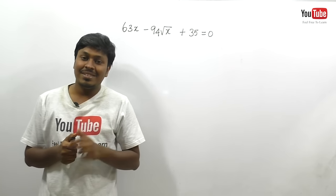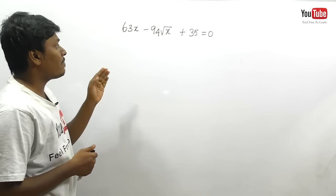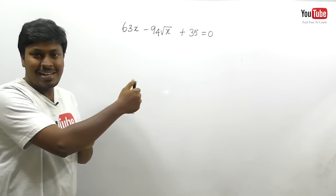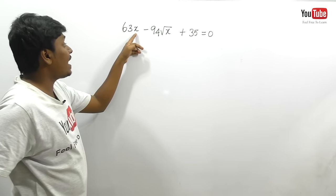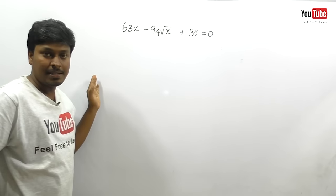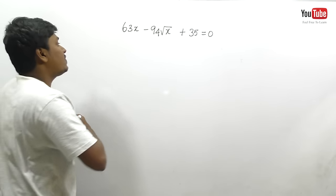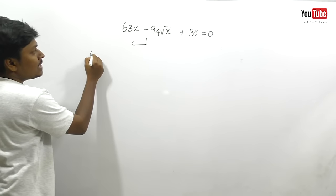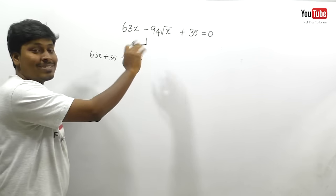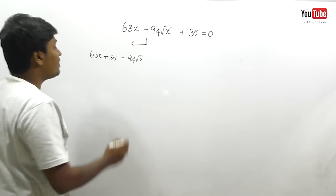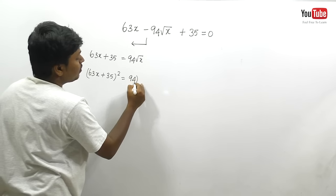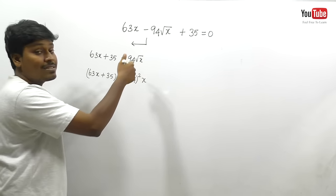Now let me move on to the toughest equation question. The equation is: 63x − 94√x + 35 = 0. This is not a quadratic equation in the normal sense — it contains both x and √x. Let me first solve by the normal method: bring 94√x to the right side: 63x + 35 = 94√x. Squaring both sides gives (63x + 35)² = 94² · x.